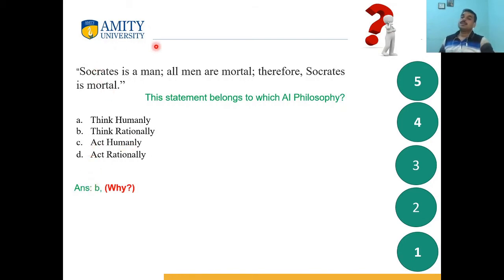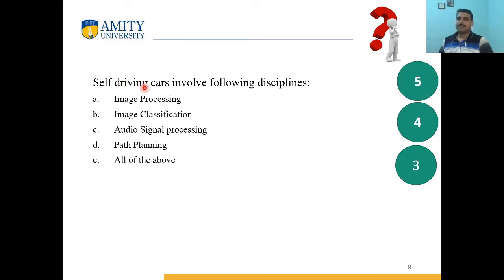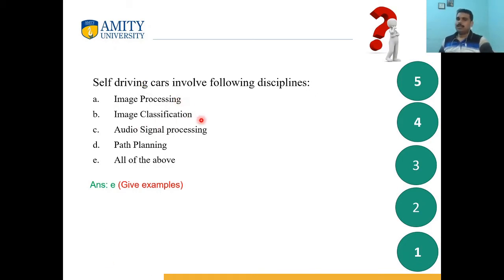Can you identify which of the following disciplines of AI are involved in self-driving cars? Yes, all of the above — image processing, image classification, audio signal processing, and path planning. All these are part of applications that are elements of a self-driving car.